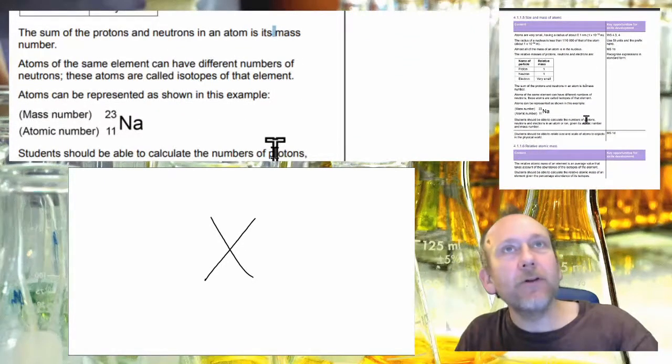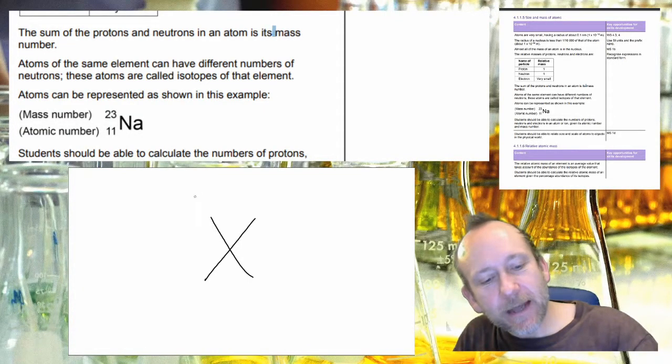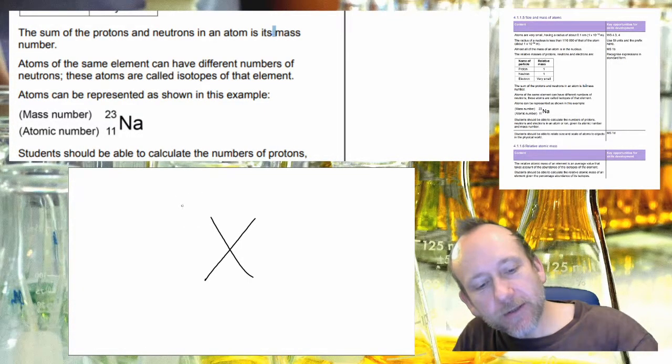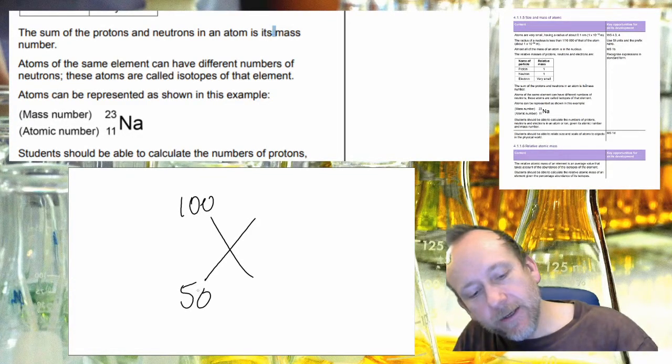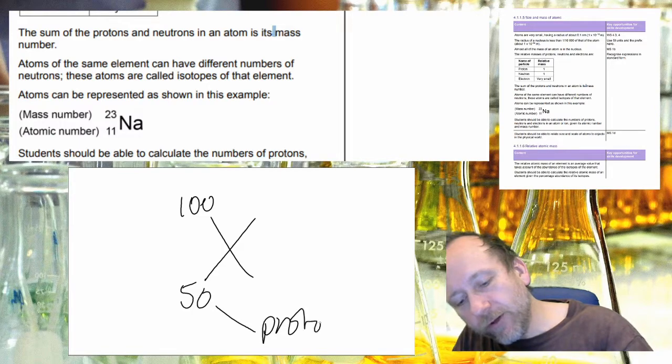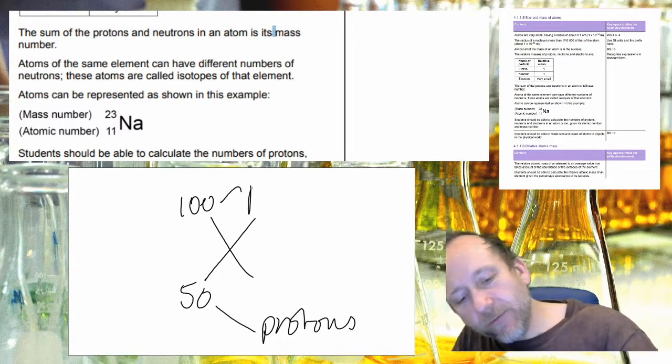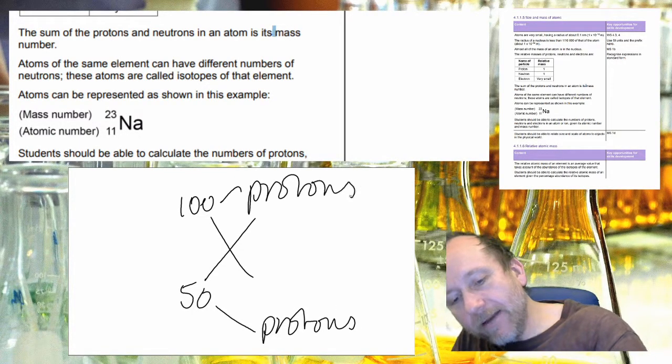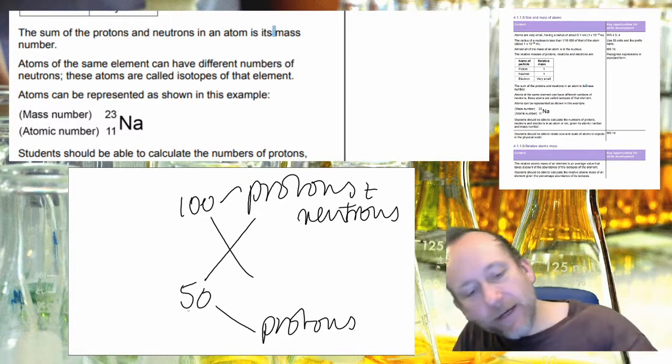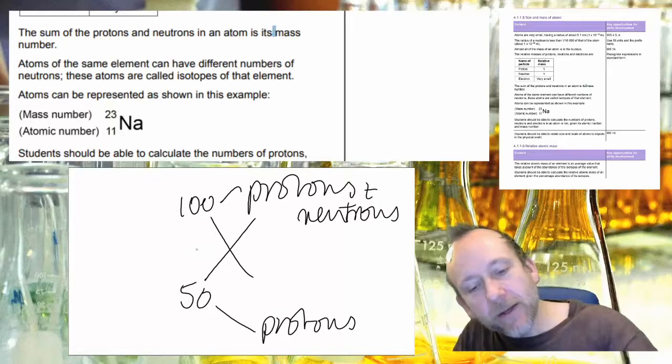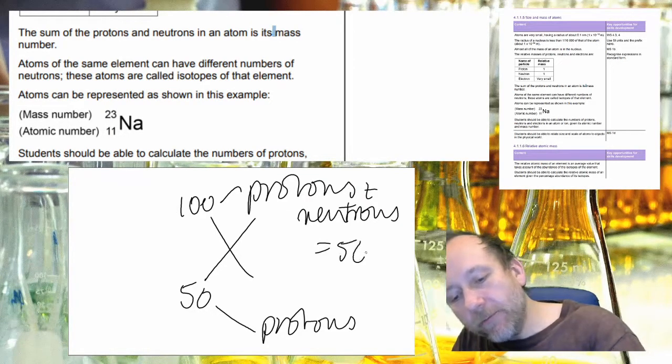So if you've got an element I'm going to call it element X, and in the specification you've got the example of sodium. You've got a number at the top, let's call that 100, and at the bottom you've got 50. At the bottom you've got the number of protons and at the top you've got the number of protons and neutrons.